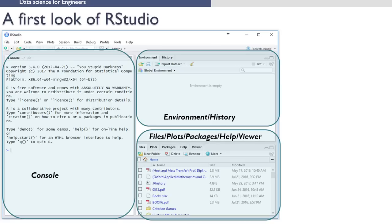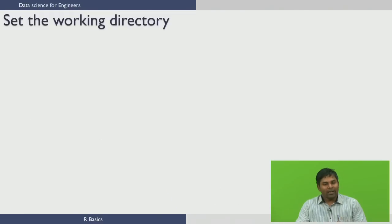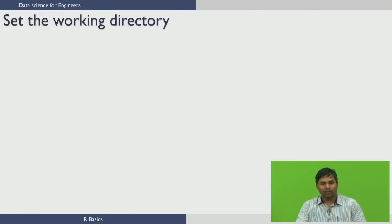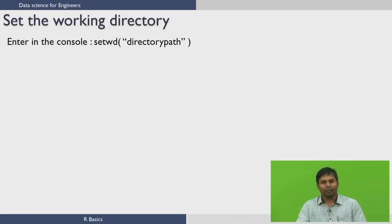Now we have got an idea about how RStudio looks. Let us see how to set the working directory in RStudio. The working directory can be set in two ways. The first way is to use the console with the command setwd(), providing the path of the directory you want as the working directory in double quotes.